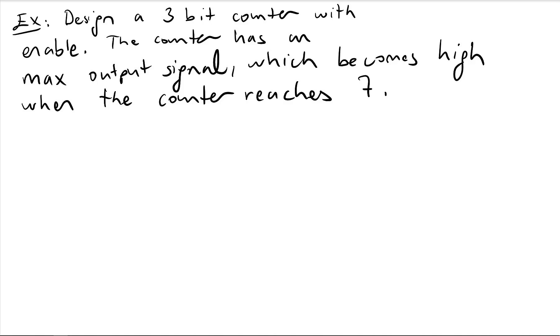Let's do another example. In this example we need to design a 3-bit counter with enable. The counter has a max output signal which becomes high when the counter reaches 7.